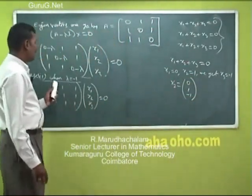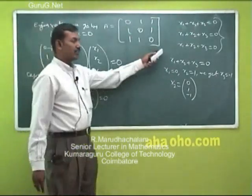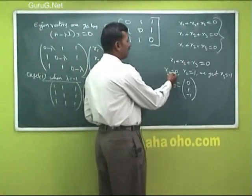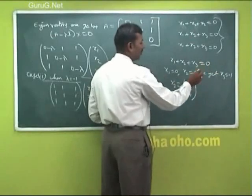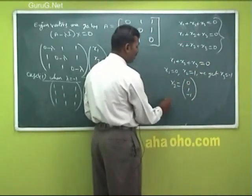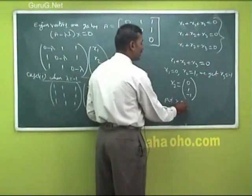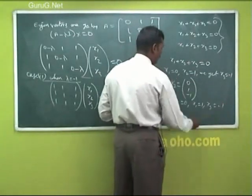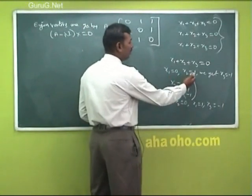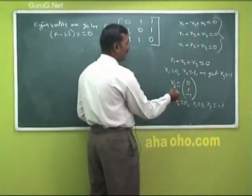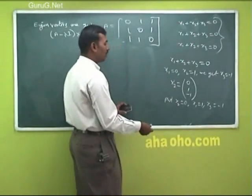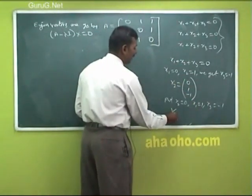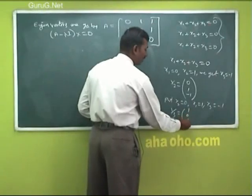Case 3 is also when lambda is minus 1. Again you get the same equation. Taking another pair of arbitrary values: put x2 equal to 0 and x1 equal to 1, we get x3 equal to minus 1. So the second eigenvector for lambda equal to minus 1 is [1, 0, minus 1].